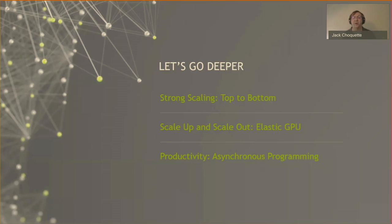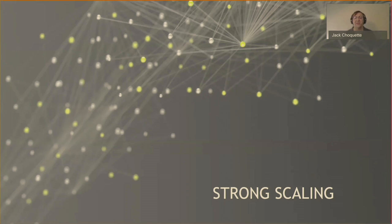Now we're going to go deeper on just a few features and capabilities of the A100. We'll show how A100 enables strong scaling from top to bottom, how scale-up and scale-out is achieved through A100's elastic GPU features, and how we enable efficiency and productivity via our asynchronous programming features. I'll dive deeper into the architecture improvements for strong scaling — essentially, how we keep the tensor cores fed with continuous streams of data.